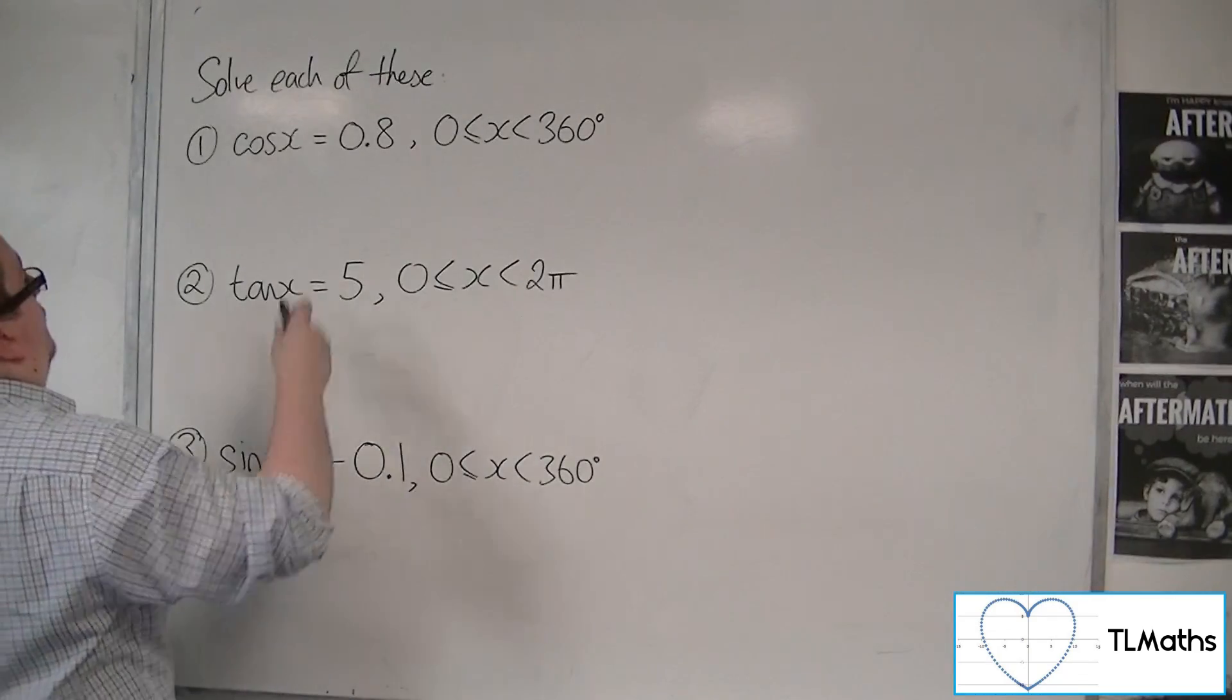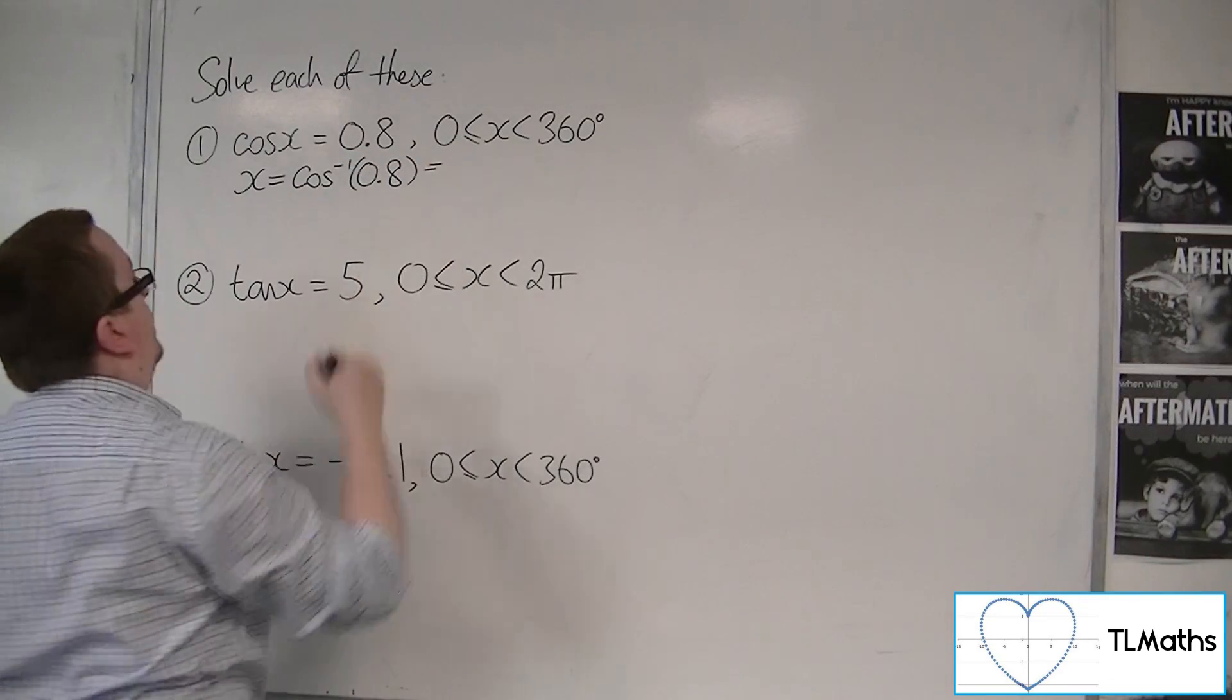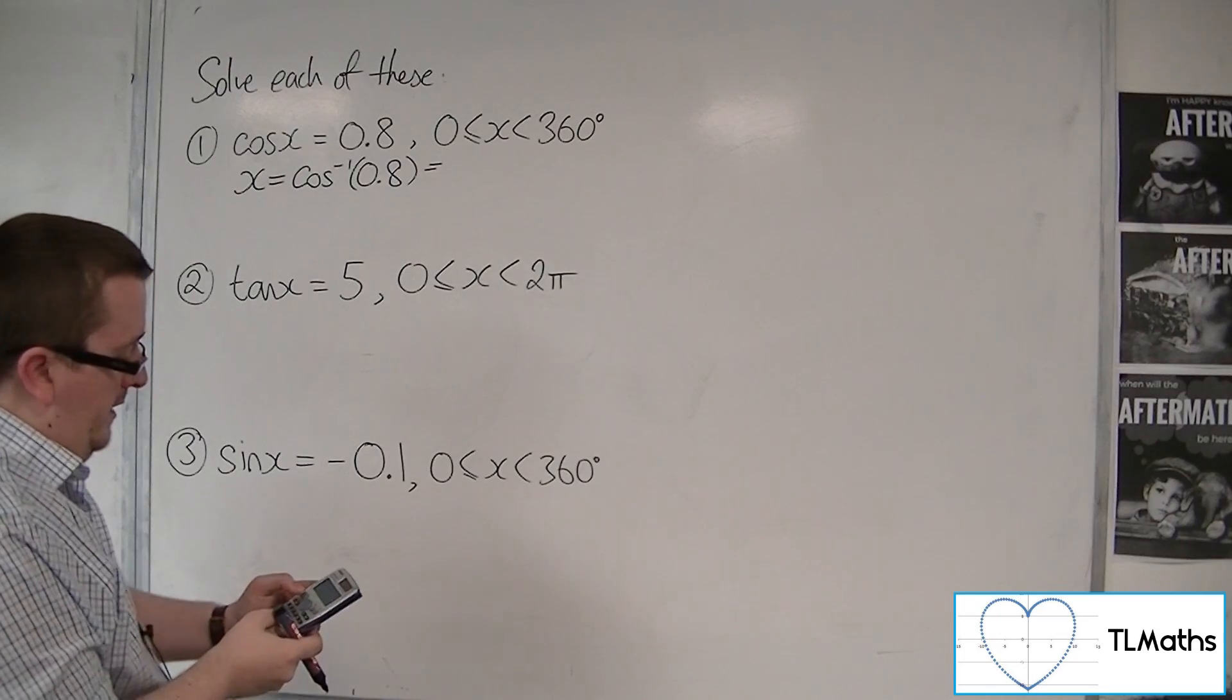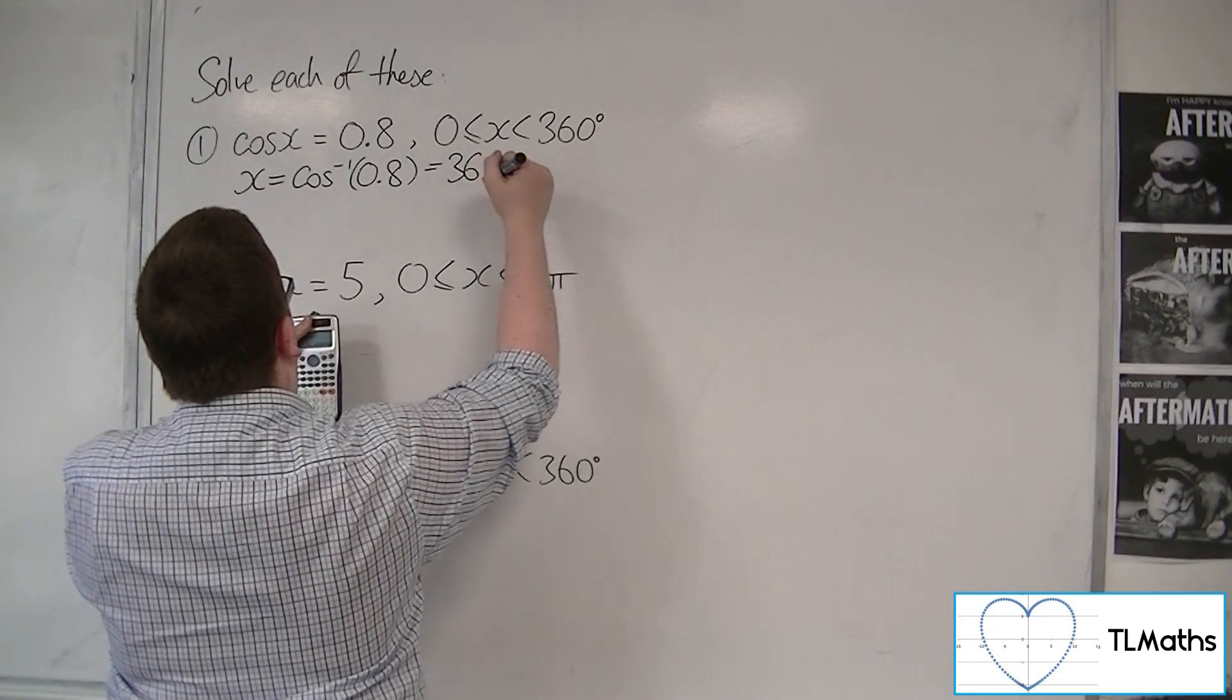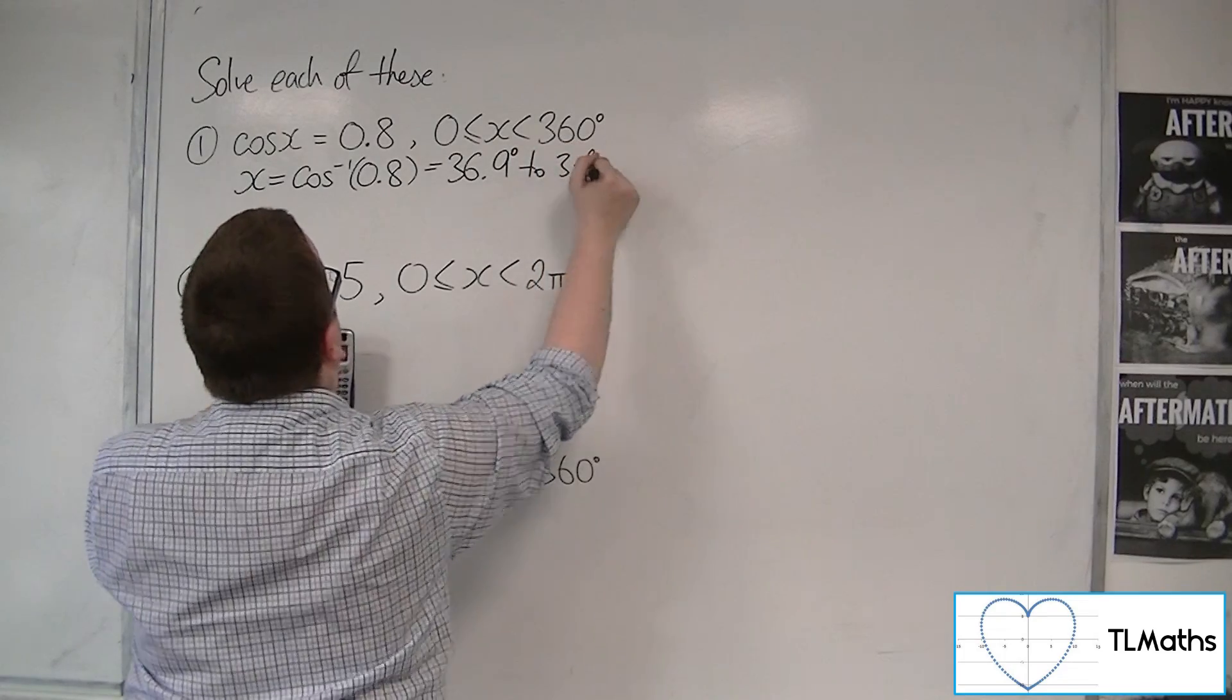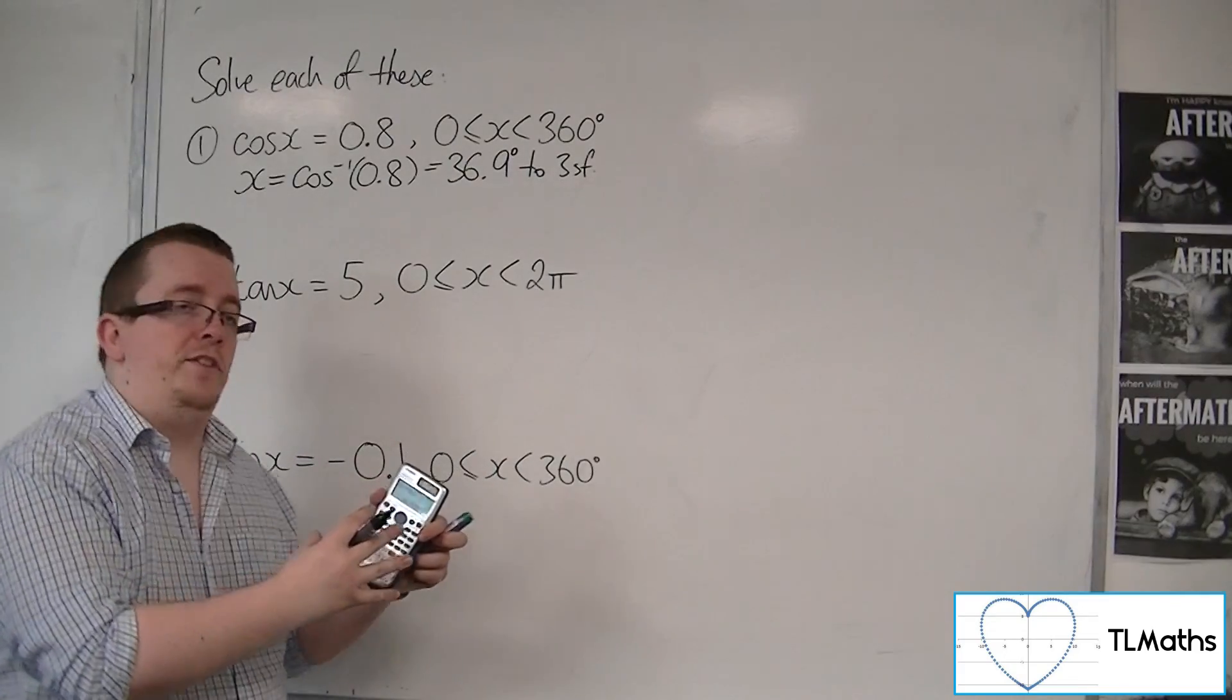First of all, inverse cosine of 0.8. That's what I need to find first, or arc cos of 0.8. Inverse cos of 0.8 is 36.9 degrees to 3 significant figures. I'm going to keep that result, the full length result, in my calculator for the time being.